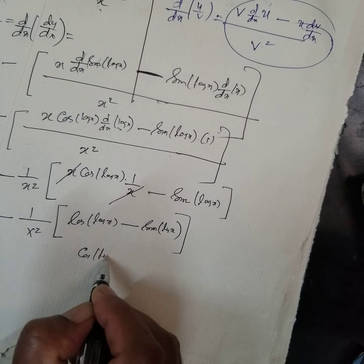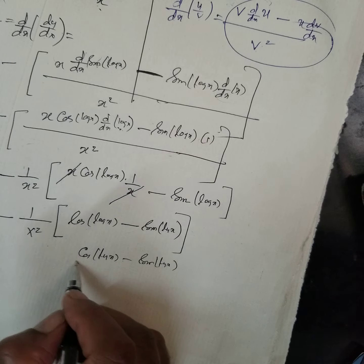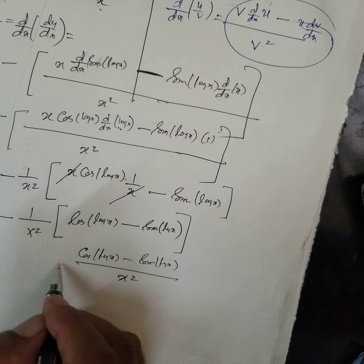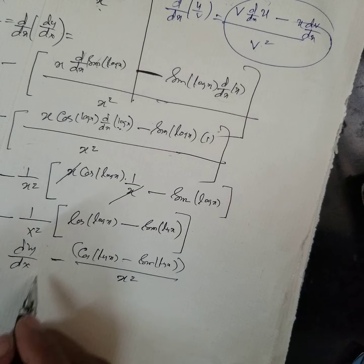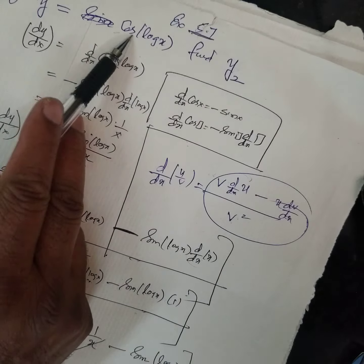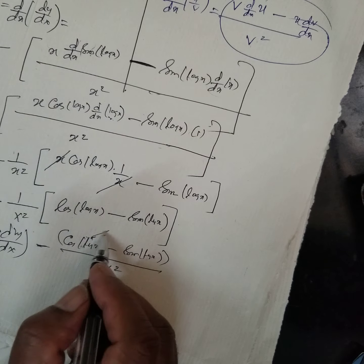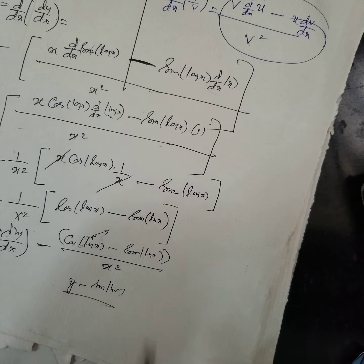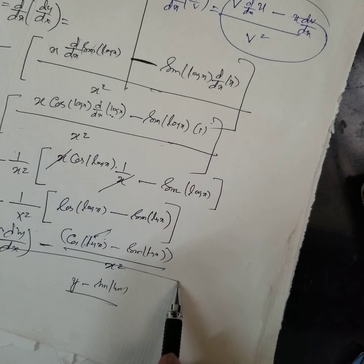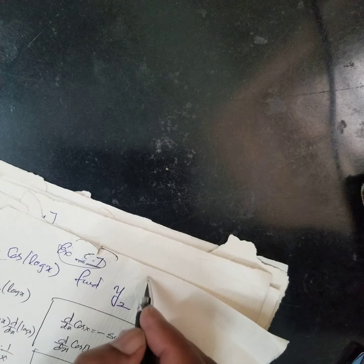Now find d²y/dx², which is called y₂. d²y/dx² is equal to d/dx of dy/dx. The formula for the differential coefficient of u/v is: denominator squared into denominator times differential coefficient of numerator, minus numerator times dv/dx, all over denominator squared.